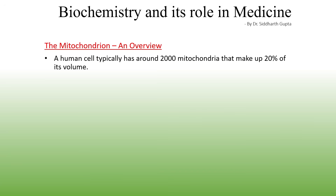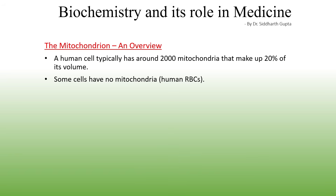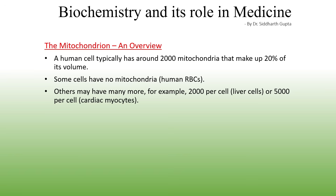On average, human cells have around 2000 mitochondria, making up one-fifth of their volume, but the range is very large. Some cells like human RBCs have no mitochondria, while others may have thousands. For instance, liver cells have around 2000 mitochondria per cell and cardiac muscle cells may have over 5000 mitochondria per cell.